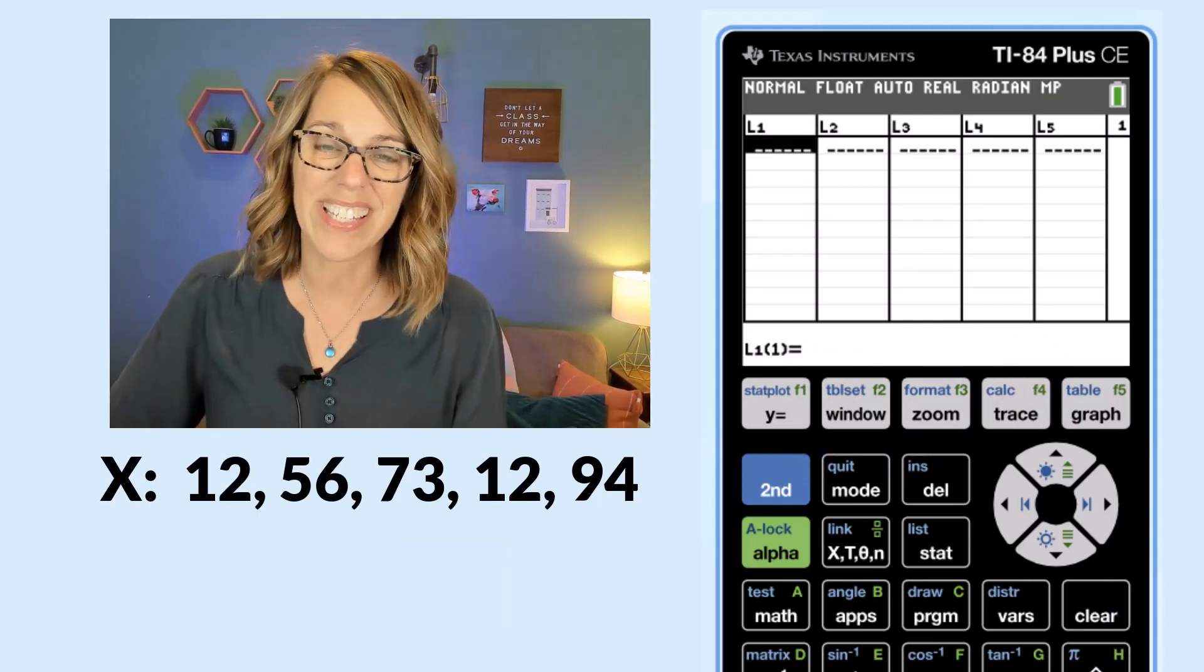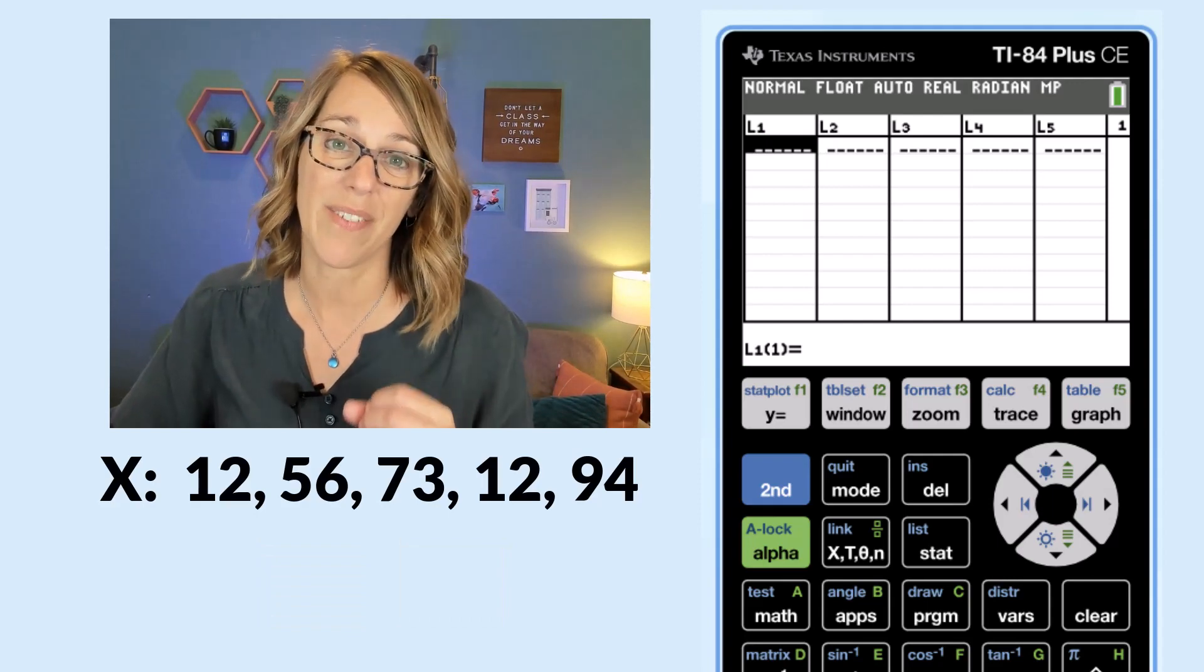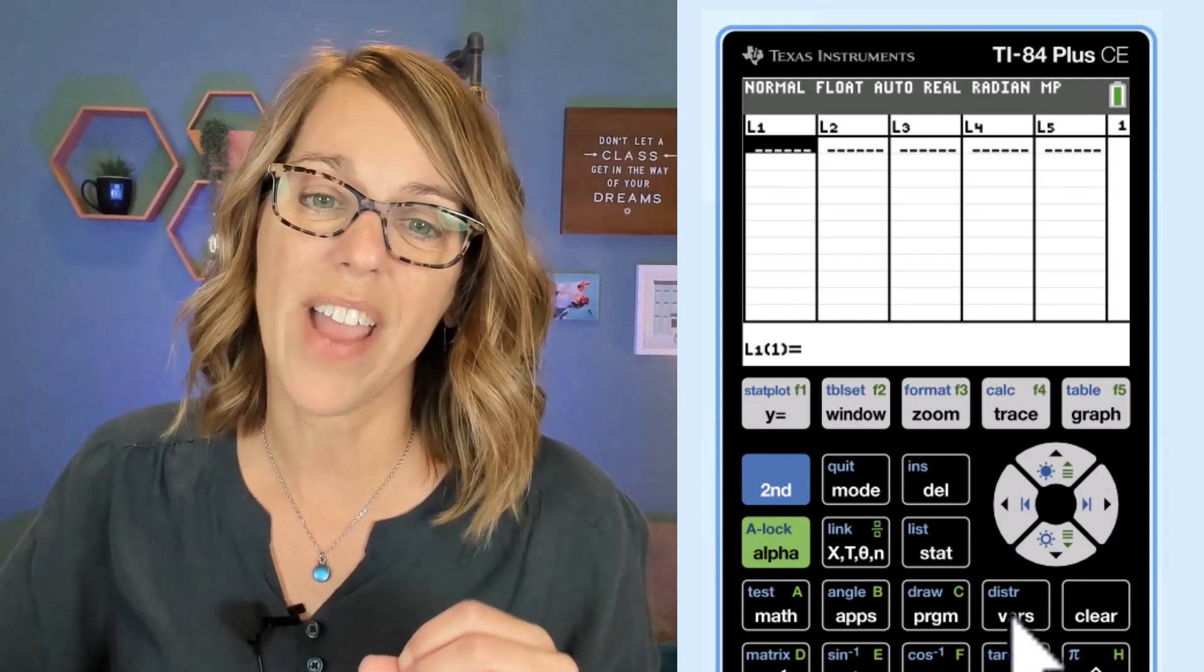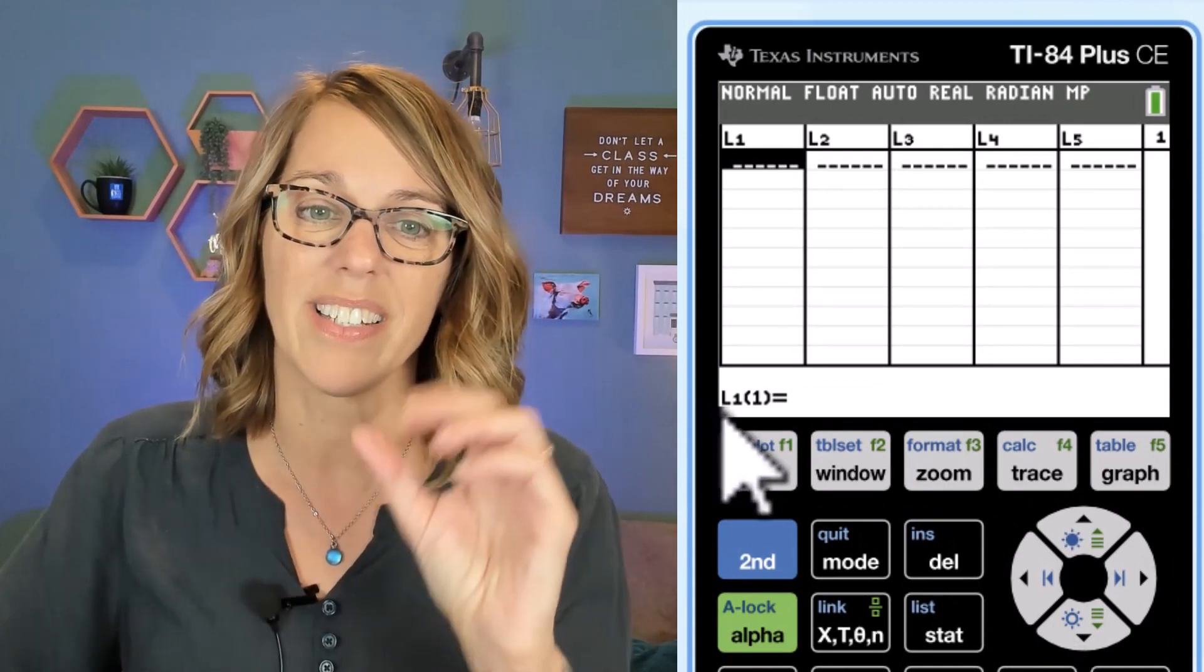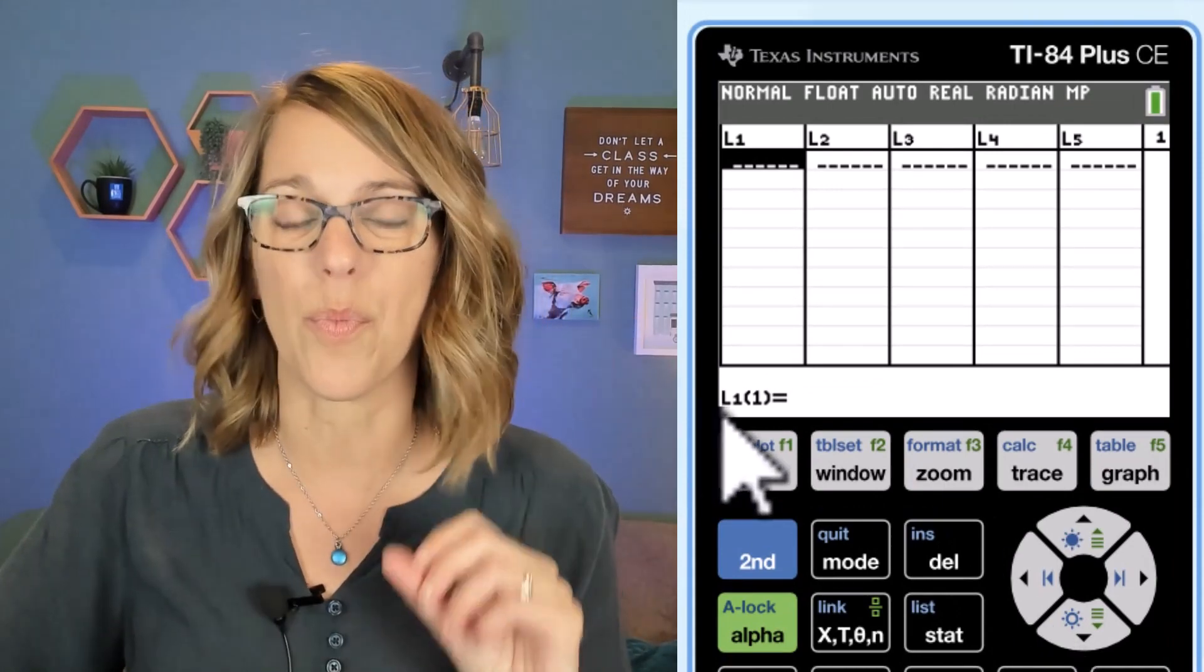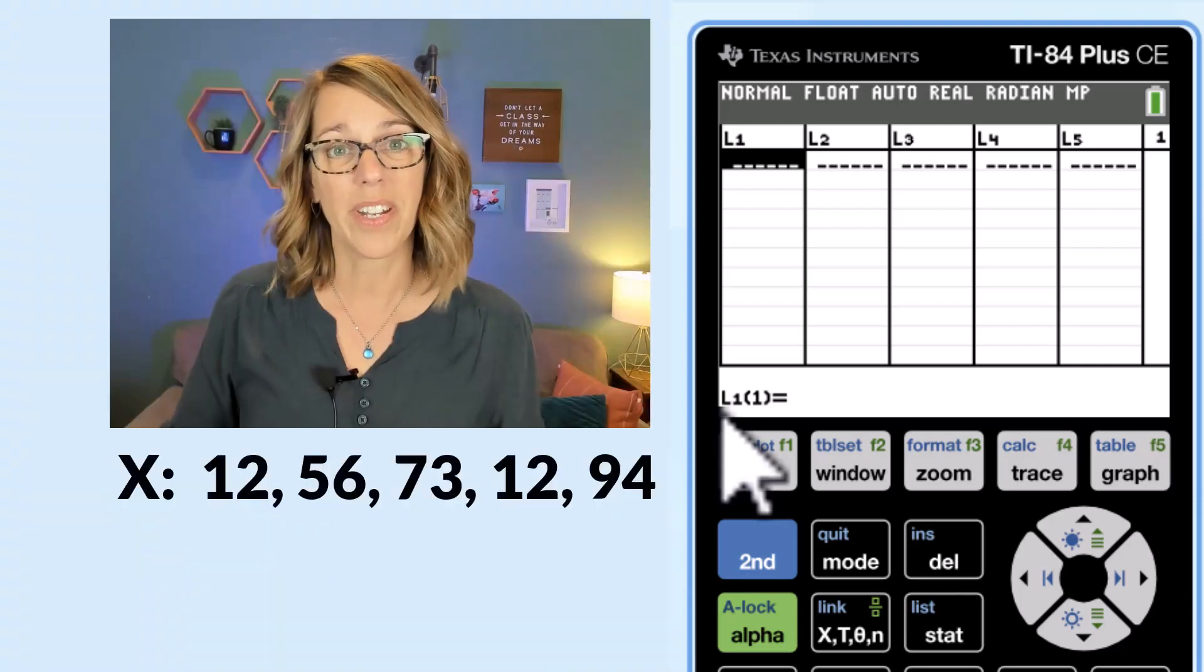So now I've got myself an empty list and I'm ready to type my data values in. Make sure that you're at the first empty cell for your list. Notice how mine has a little L1 parentheses 1 next to it and then we're going to type our data in.